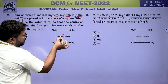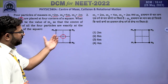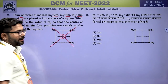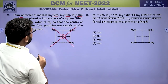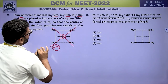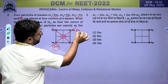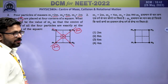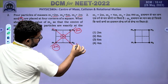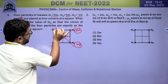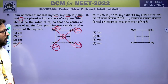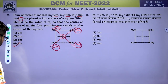For the centre of mass to be at the centre of the square, the mass distribution must be symmetric about both diagonal lines. M1 = 2M and M3 = 2M are symmetric about one line. M2 = 4M, so for symmetric distribution, M4 must also be 4M. The correct answer is 4M.